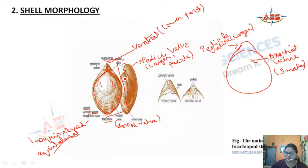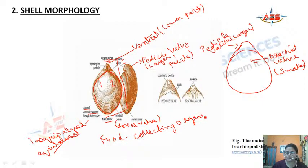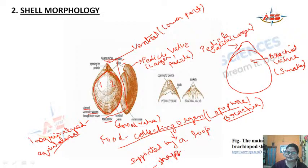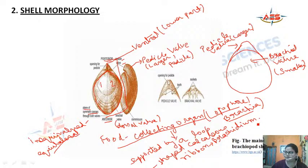The brachial valve consists of a food-collecting organ known as the lophophore or brachia. The brachia is supported by a loop-shaped calcareous ribbon known as the brachidium.